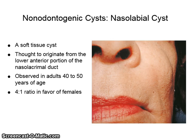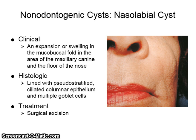The nasolabial cyst is a soft tissue cyst thought to originate from the lower anterior portion of the nasolacrimal duct. It is observed in adults between 40 to 50 years of age, and there is a 4-to-1 ratio in favor of females. Clinically, you would see an expansion or swelling in the mucobuccal fold in the area of the maxillary canine and the floor of the nose. Histologically, it is lined with pseudostratified ciliated columnar epithelium and multiple goblet cells. It is also treated by surgical excision.